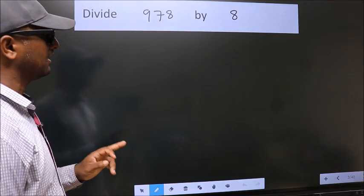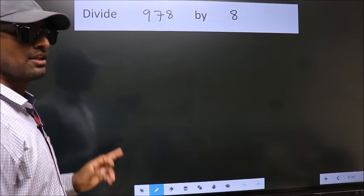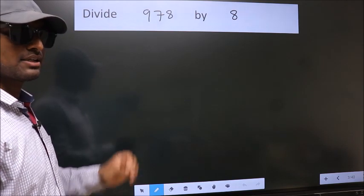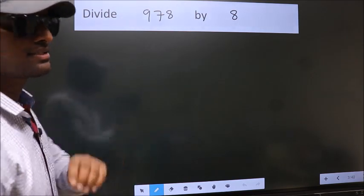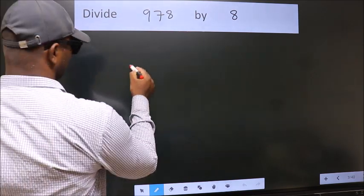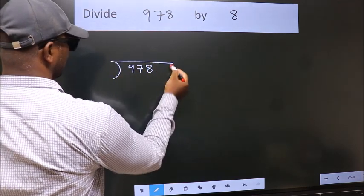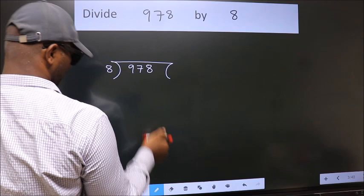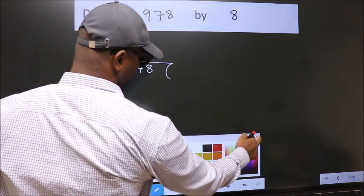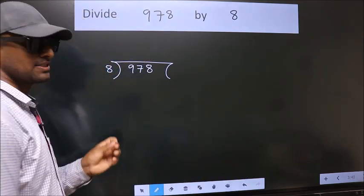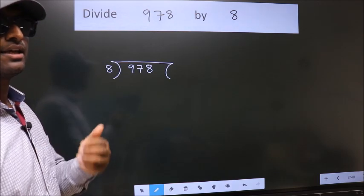Divide 978 by 8. To do this division, we should frame it in this way: 978 here, 8 here. This is your step 1. Next.